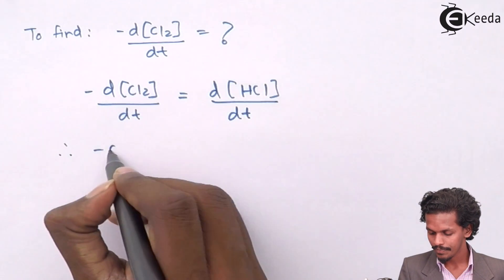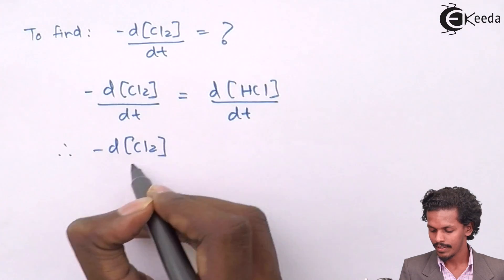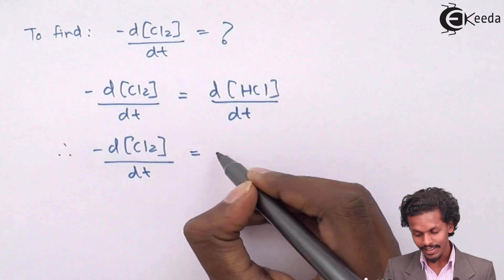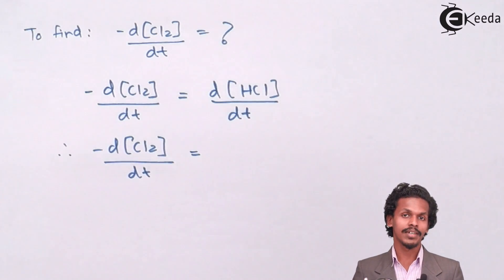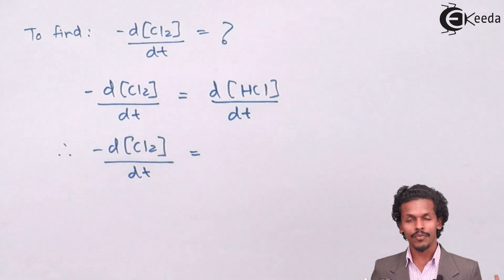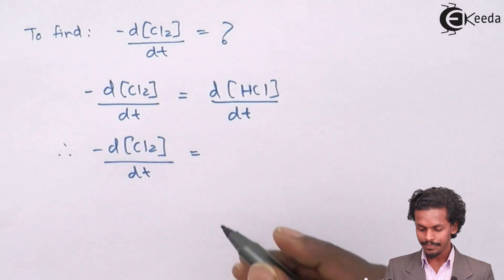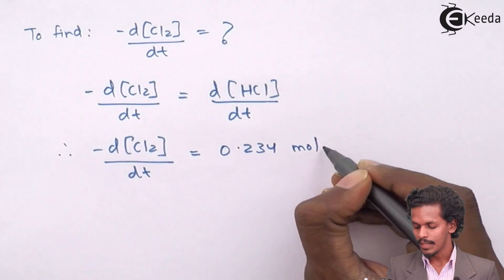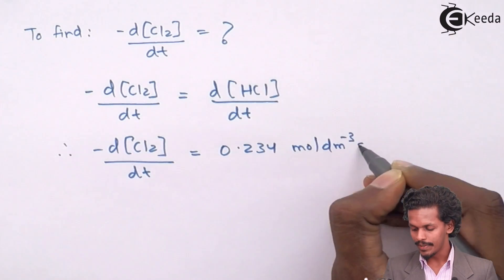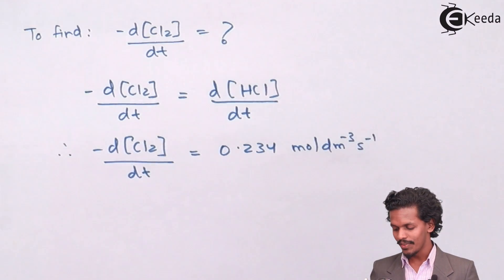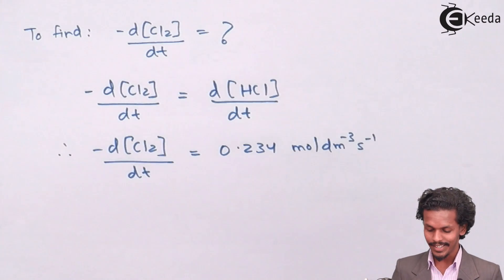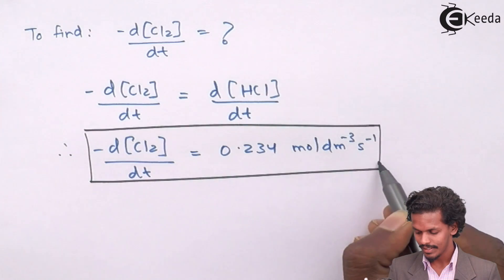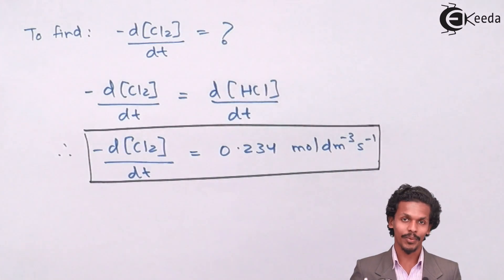So that is what we will get. Minus dCl2 upon dt is equals to dHCl upon dt. Therefore, the value of consumption of Cl2 is right now, as again, the rate of formation of HCl is given as 0.234 moles per dm³ per second. So this is how we have calculated another data or another requirement.